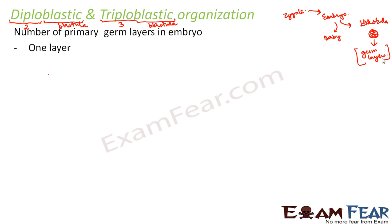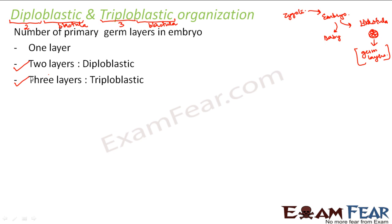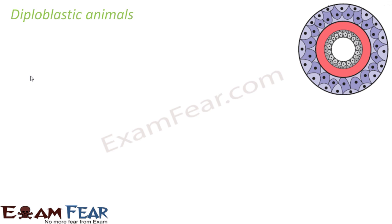So there are possibilities: there can be one germ layer, two germ layers, or three germ layers. If there are two germ layers, the animal is known as diploblastic. If there are three germ layers, that animal is known as triploblastic. These germ layers give rise to every organ of the body, starting from the skin and hair to the digestive tract — not only external organs, but also internal organs. So now you understand the significance of the germ layers.